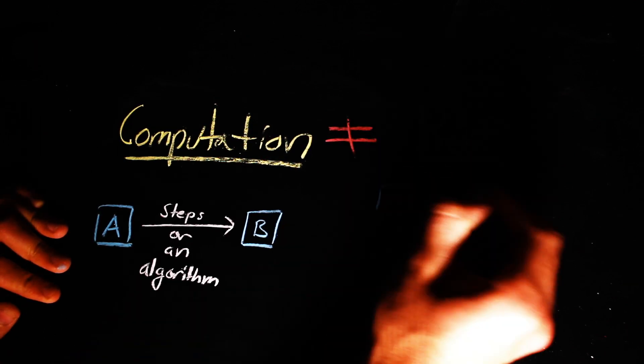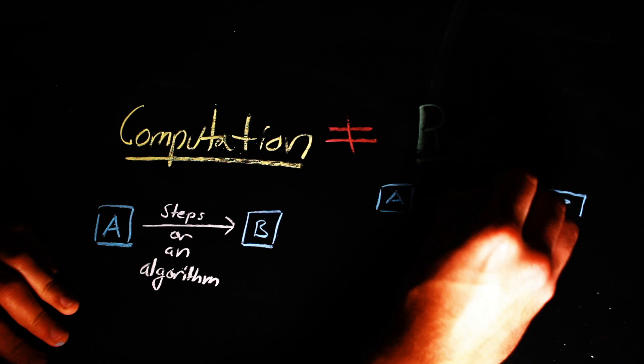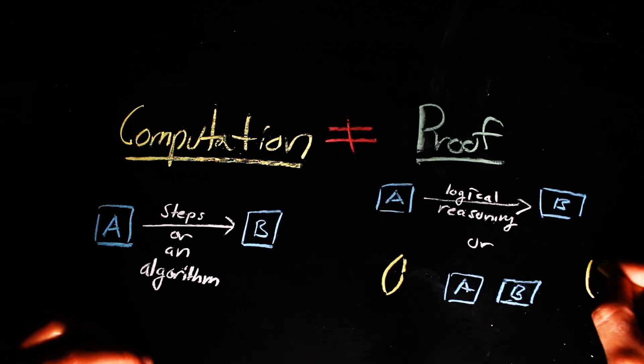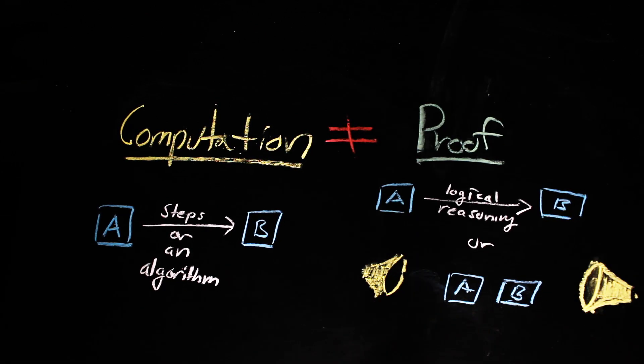Proofs, on the other hand, can be constructive and tell you exactly how one statement is deduced from another, or they can be formulated indirectly, which shows the truth of a statement without describing exactly how one statement is deduced from another.